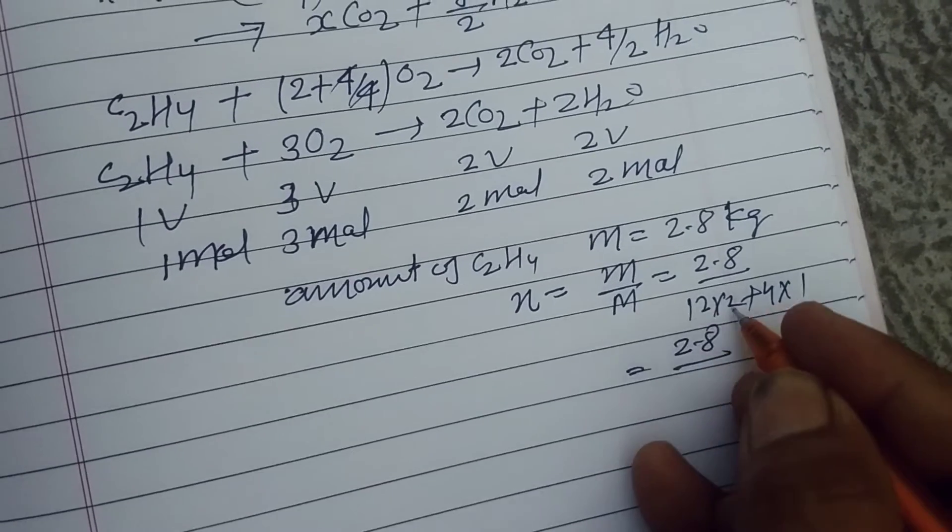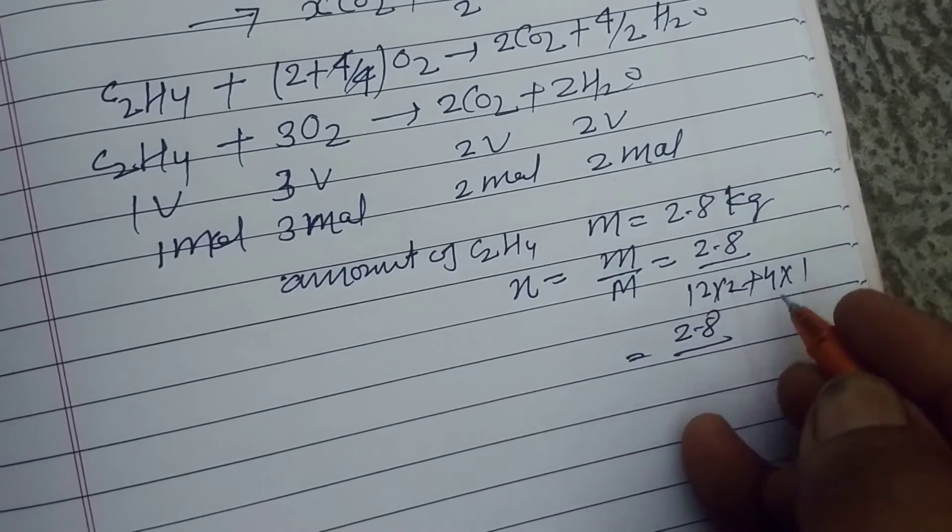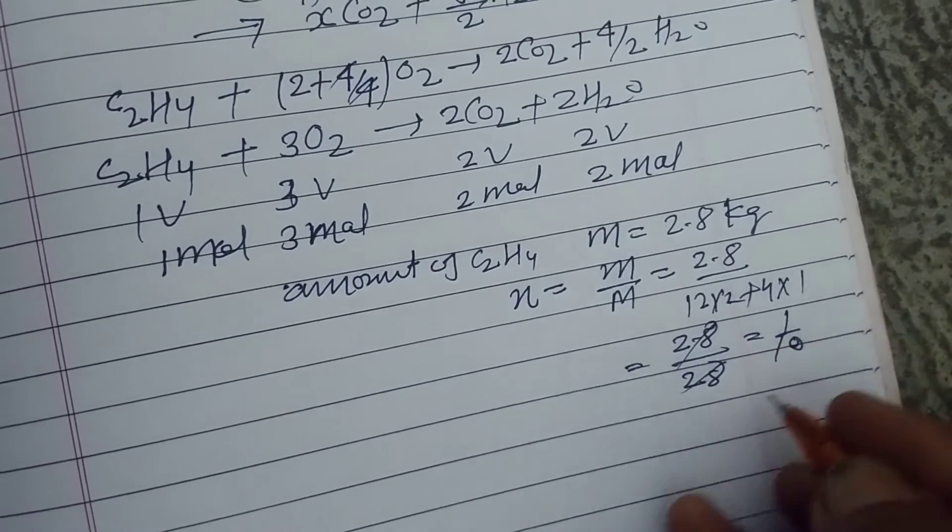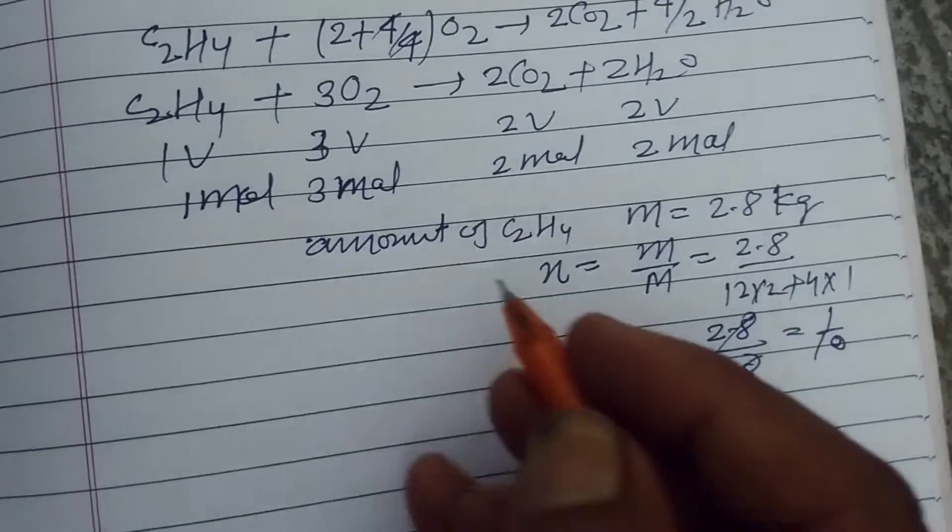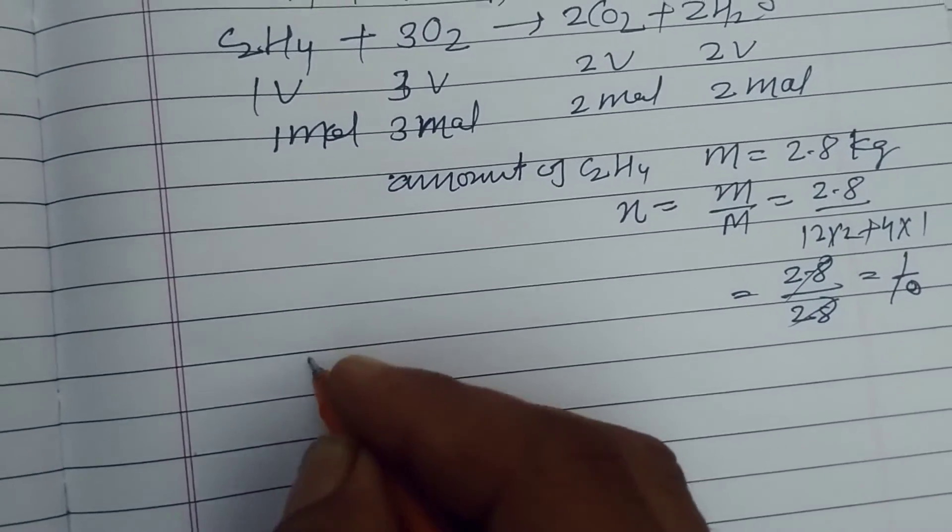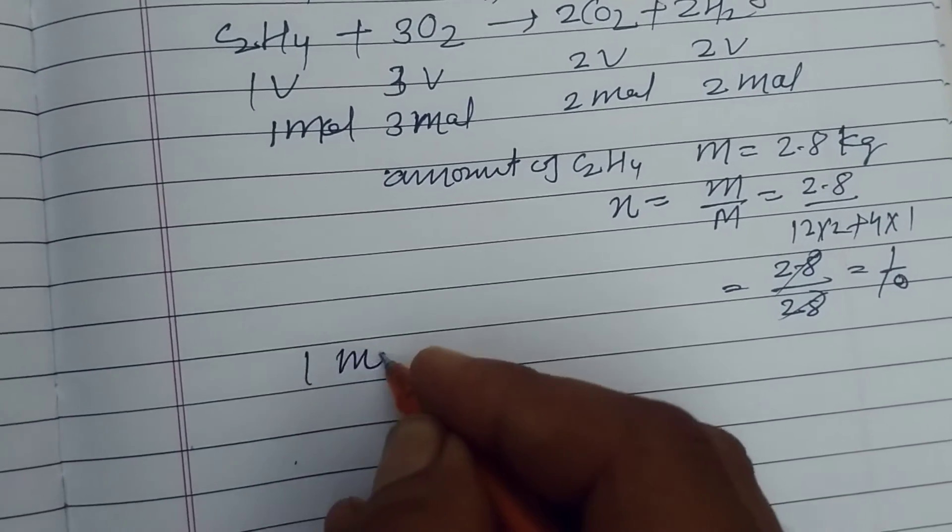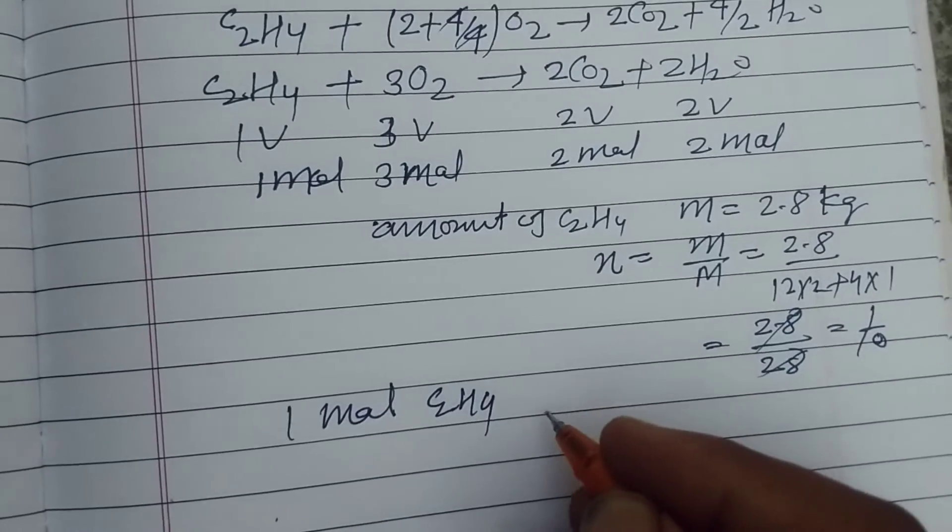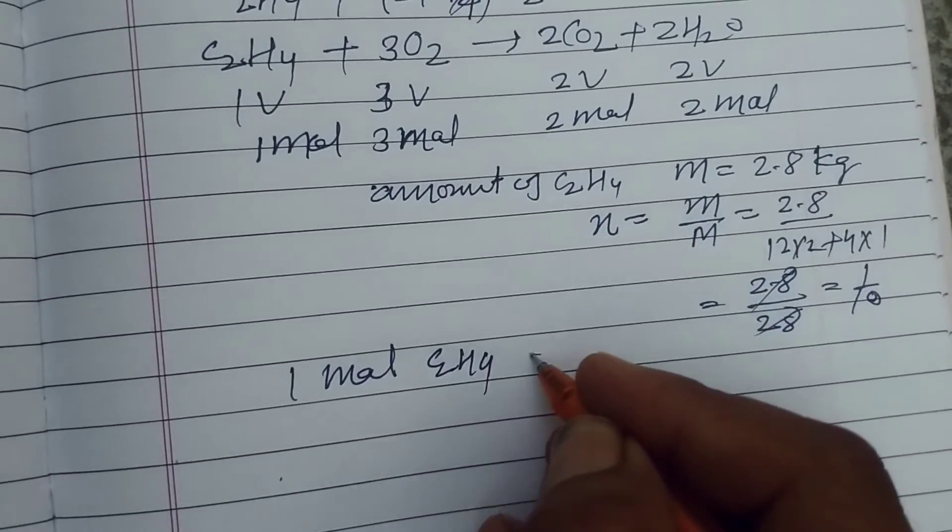So this is 2.8 upon, 12 into 2 is 24, 24 plus 4 is 28. So this is 1/10. So number of moles here of ethylene is 1/10 mole. One mole of ethylene requires to combust completely 3 mole of O2.